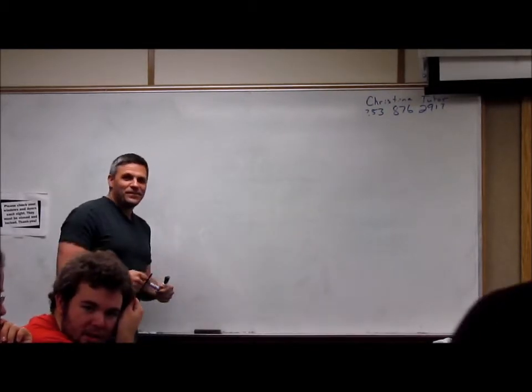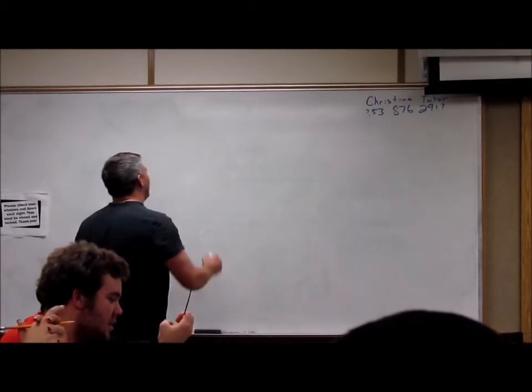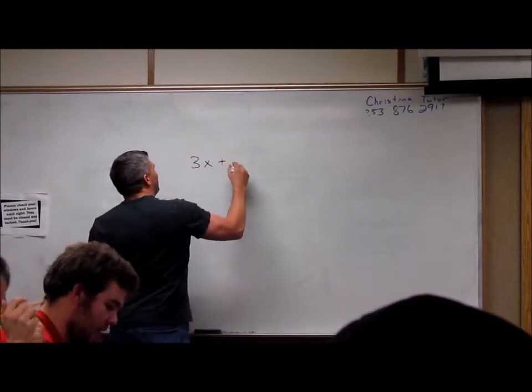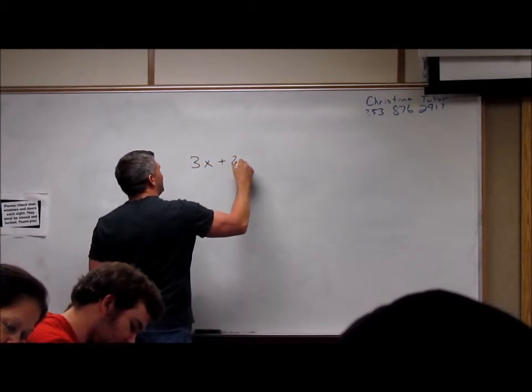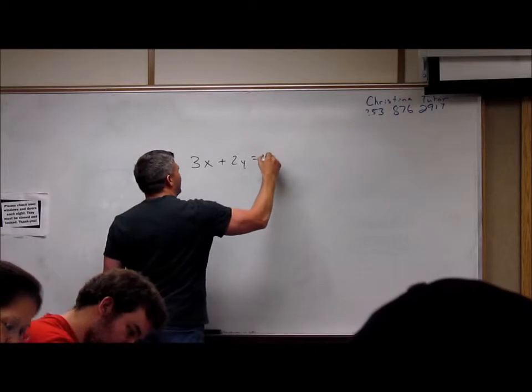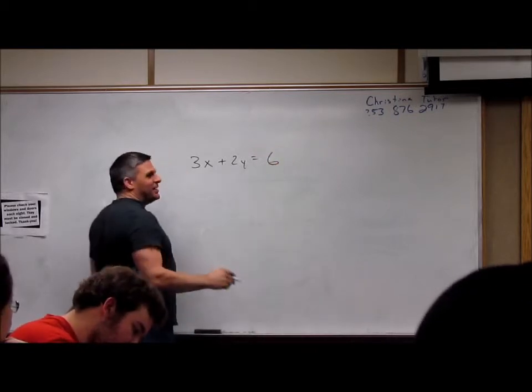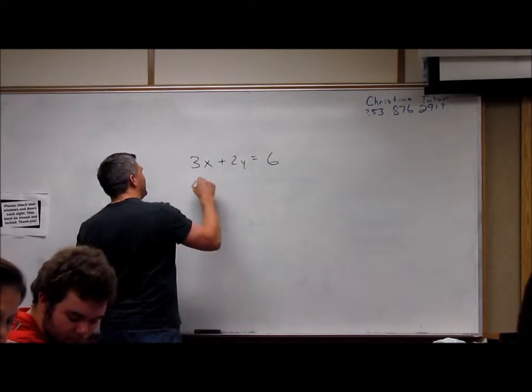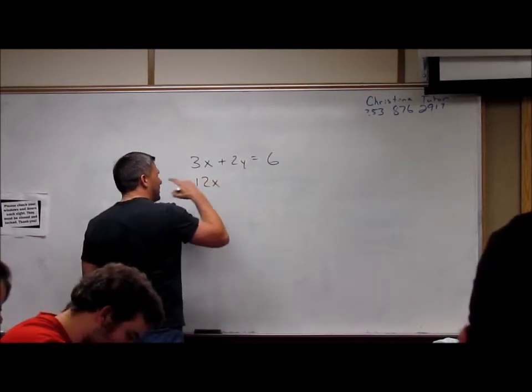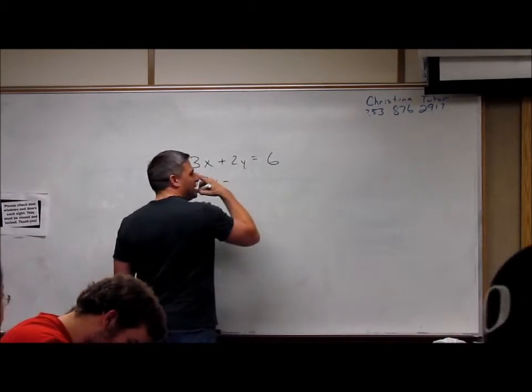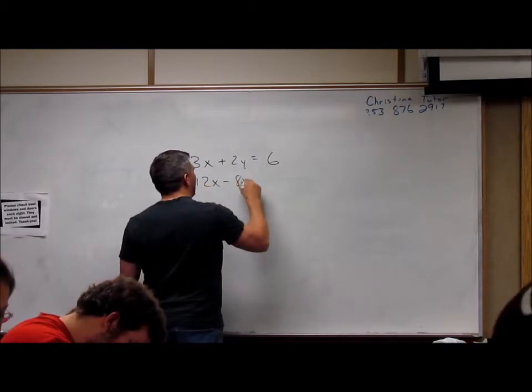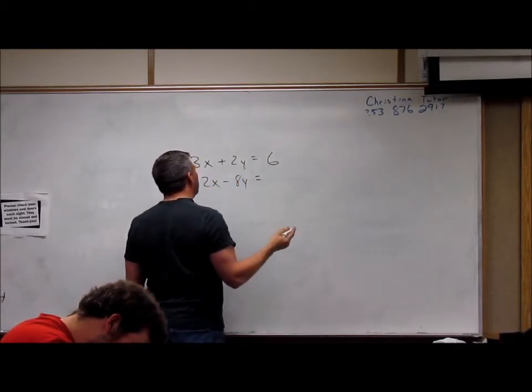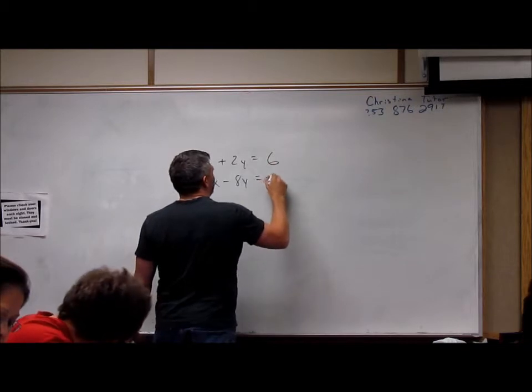I'm going to take this part off here. Now let's do another one. How about 3x plus 2y equals 6 and 12x, negative 12x minus 8y equals minus 24.